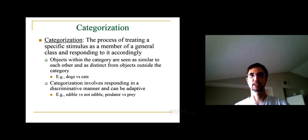But let's start with categorization in general. Categorization is the process of treating a specific stimulus as a member of a general class and responding to it accordingly. So a category is a general kind of thing, and when we categorize, we're treating an object or stimulus as a member of that broader class. By doing so, we can attribute what we know about that class to that specific object. All members within a category are seen as similar to each other in certain respects and also as different from members of other categories. That's the point of categorization—things in the category are more similar to each other than they are to things outside the category.